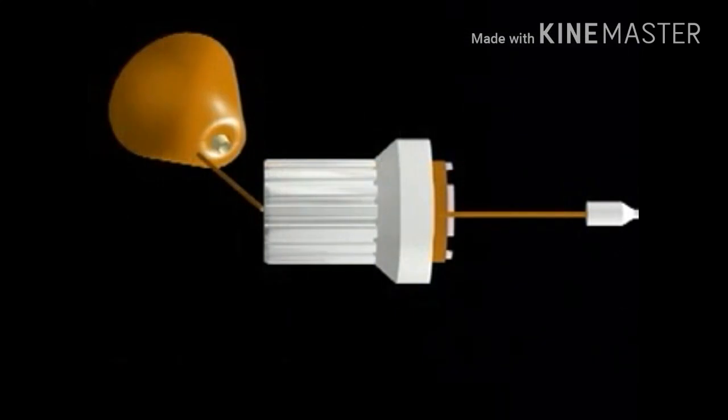Weft to insert is stored on packages in the weft creel. The measuring drums, one for each channel, pull and store weft from the packages.